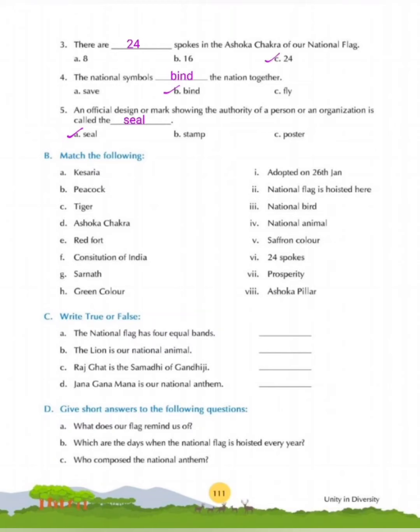Question B: Match the following. A — Kesaria: Kesaria is the saffron color. B — Peacock: Peacock is the national bird of India. C — Tiger: Tiger is the national animal. D — Ashoka Chakra: Ashoka Chakra has 24 spokes. E — Red Fort: The national flag is hoisted here.